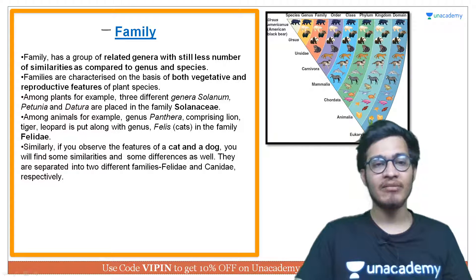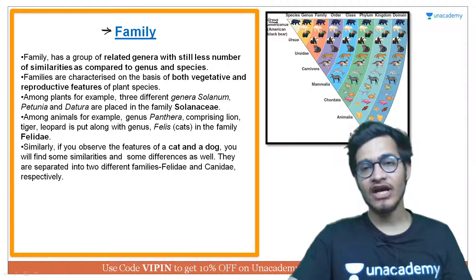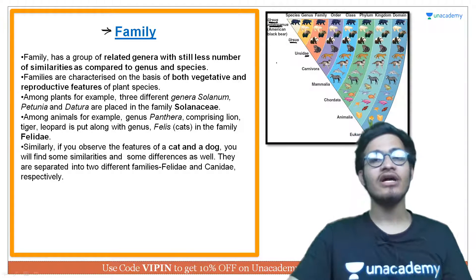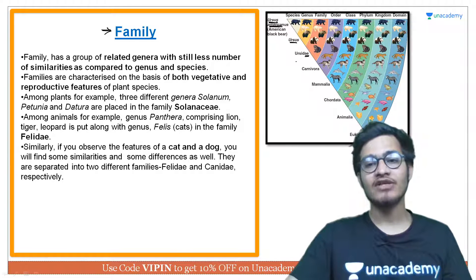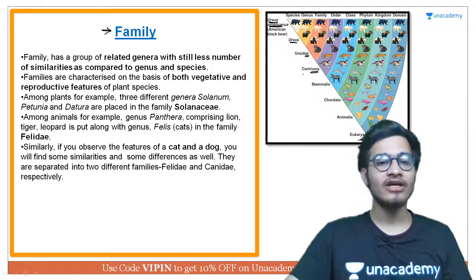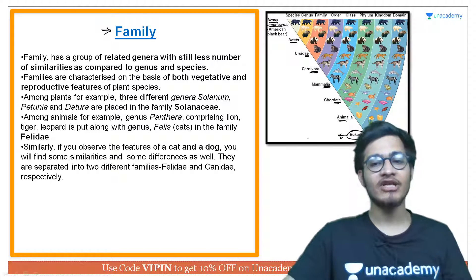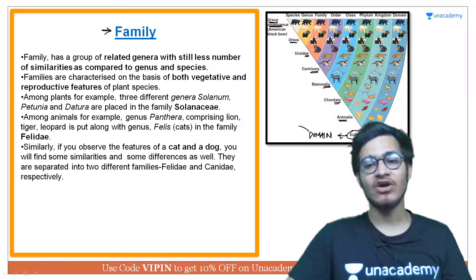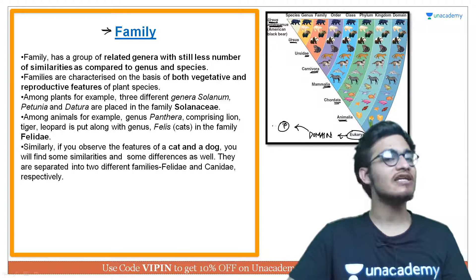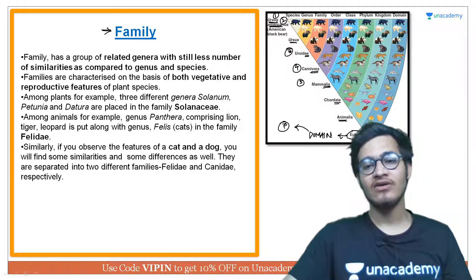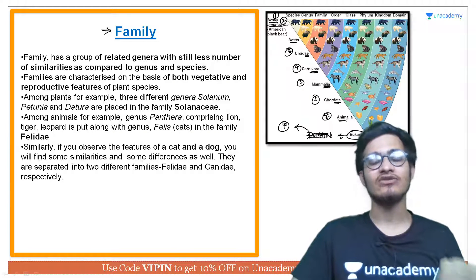Now let's talk about the topic — family. We have already talked about genus and species. The suffix 'ae' is used for family names. Carnivora is an order, Mammalia is a class, Chordata is a phylum, and Animalia is a kingdom. Karl Woese introduced domain as an additional category, but domain is not an obligate category — it is not among the seven compulsory categories. The seven compulsory categories are: species, genus, family, order, class, phylum, and kingdom. Domain is simply read about but not usually considered.